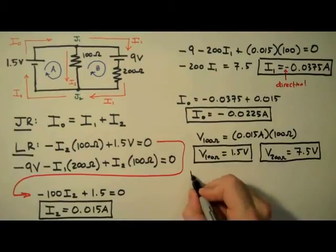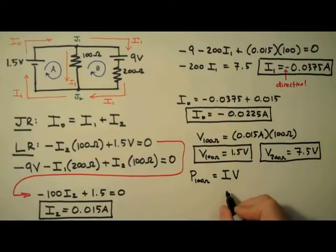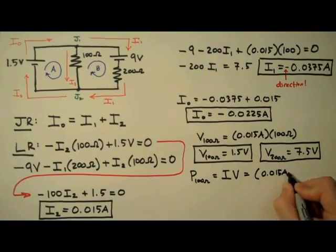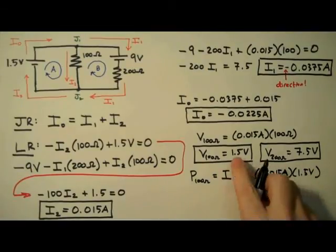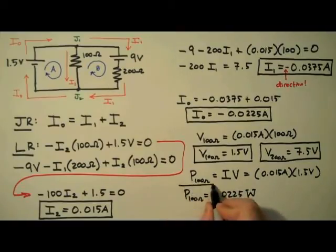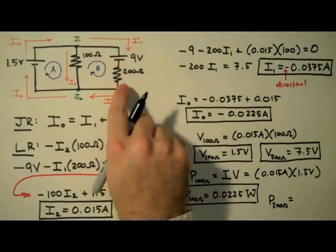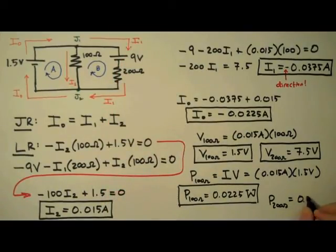To determine the power dissipated by these resistors, we simply multiply the current through by the voltage across — IV. For the 100 ohm resistor, using 15 milliamps and 1.5 volts, the power dissipated is 0.225 watts, or 22.5 milliwatts. And for the 200 ohm resistor, multiplying the current times its resistance value yields 281.25 milliwatts.